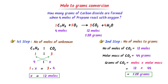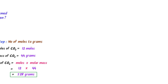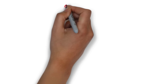In such problems: first convert the given number of moles to moles of the unknown species, then convert the number of moles to grams. The third type of stoichiometric conversion is grams-to-mole conversion.